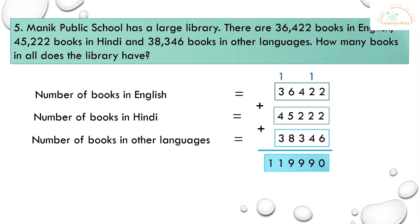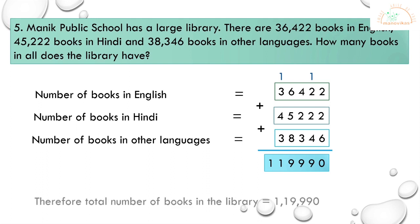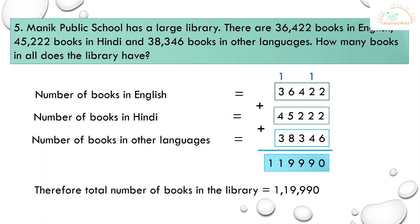After performing the addition of 36,422 + 45,222 + 38,346, we get one lakh nineteen thousand nine hundred and ninety (1,19,990). The final statement: therefore, total number of books in the library is equal to one lakh nineteen thousand nine hundred and ninety.